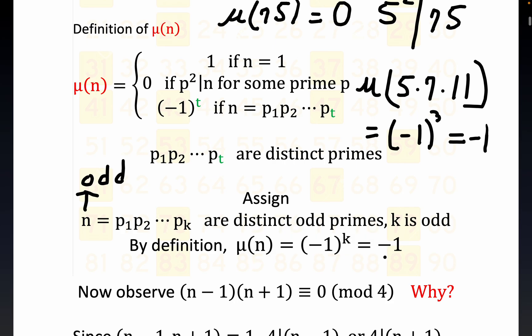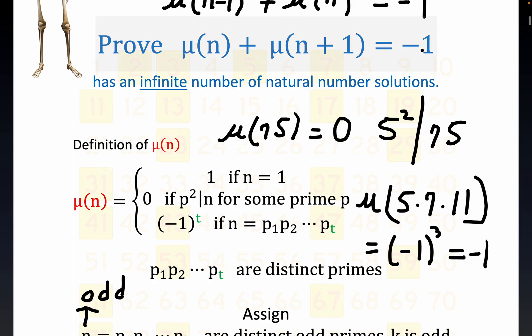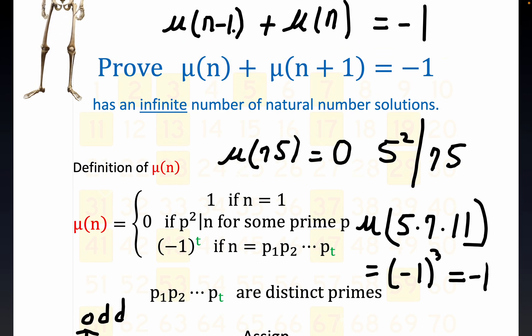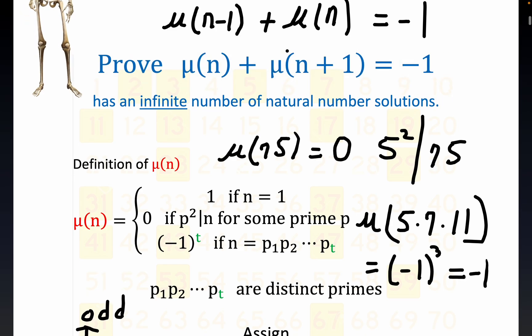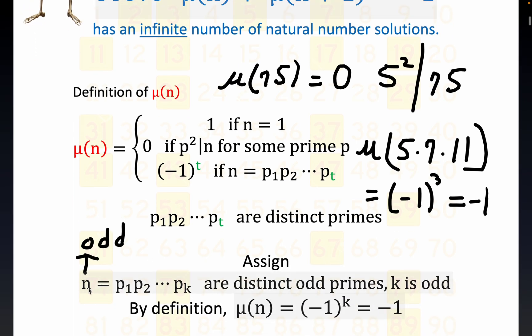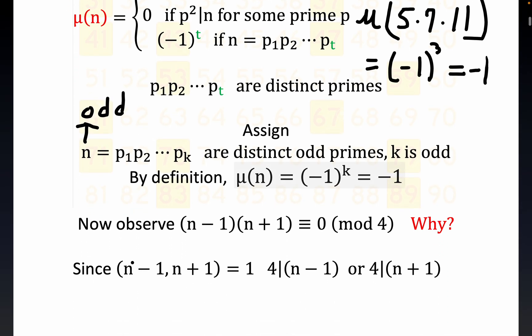We get μ(n) is equal to negative 1 for free. Since k is odd, minus 1 to an odd value is negative 1. We're interested in that because we want the whole thing to be equal to negative 1. So far we've created an n that gives μ(n) = -1. That means we want n plus 1 or n minus 1 to be divisible by a square, and we will have proved it because there's an infinite number of n's of this form, since there's an infinite number of primes.